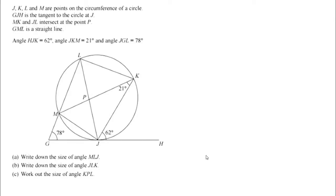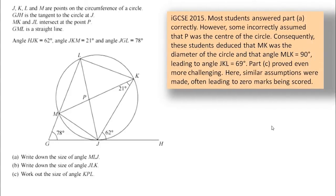Okay, well, how did students get on? Let's have a look at the examiner's remarks. The examiners say most students answered part A correctly. However, some incorrectly assumed that P was the centre of the circle, which I'm afraid isn't given in the description or in the diagram. Consequently, these students deduced that MK was the diameter of the circle, so this line from here to here was a diameter, which it isn't, and that angle MLK was therefore 90 degrees, leading to angle JKL equal to 69 degrees, and all of that is wrong.